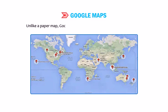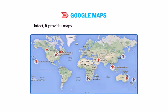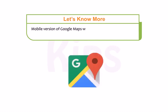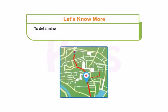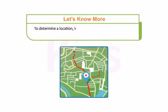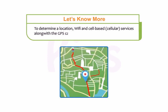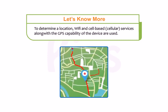Unlike a paper map, Google Maps is not limited to one state or country — in fact, it provides maps for almost every country in the world. The mobile version of Google Maps was released for Android devices on September 23, 2008. To determine a location, Wi-Fi and cell-based cellular services along with the GPS capability of the device are used.